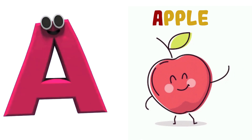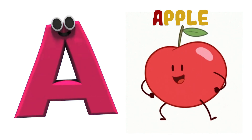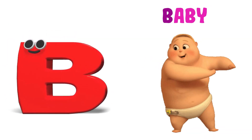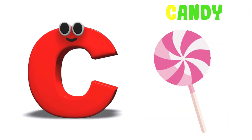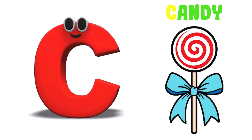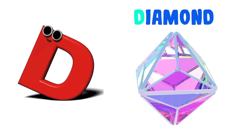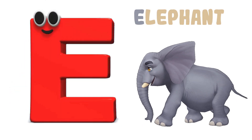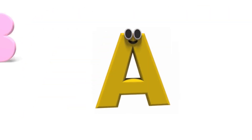A is for Apple. A-A-Apple, A-A-Apple, A-Apple. B is for Baby. B-B-Baby, B-B-Baby, B-Baby. C is for Candy. C-C-Candy, C-C-Candy, C-Candy. D is for Diamond. D-D-Diamond, D-Diamond. E is for Elephant. E-E-Elephant, E-E-Elephant, E-Elephant.